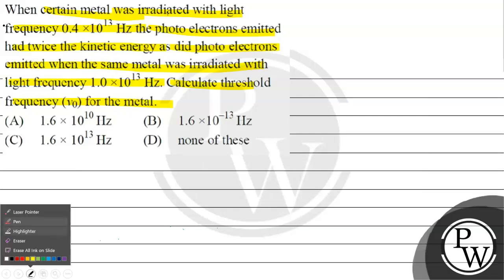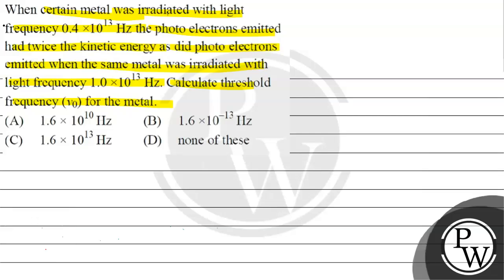Option A is 1.6 × 10^10 Hz. Option B is 1.6 × 10^(-13) Hz. Option C is 1.6 × 10^13 Hz. Option D is none of these. The key concept for this question is the photoelectric effect.